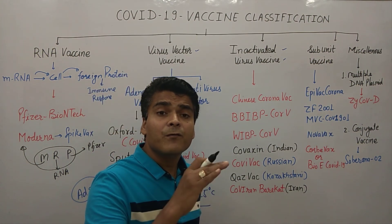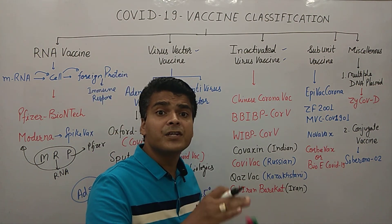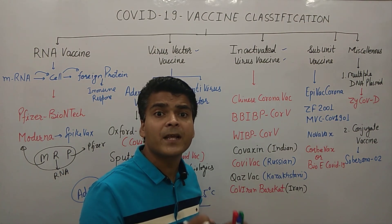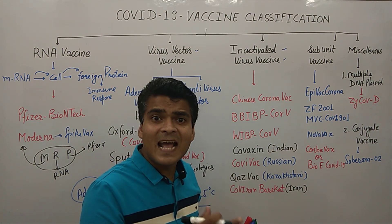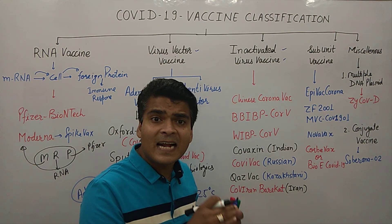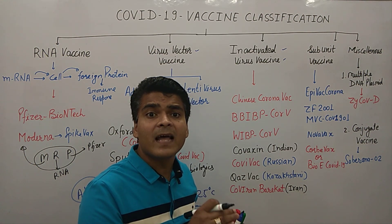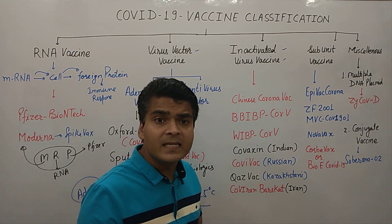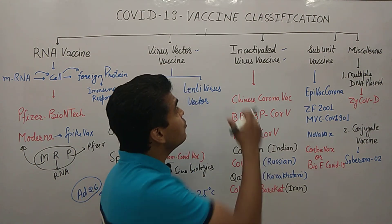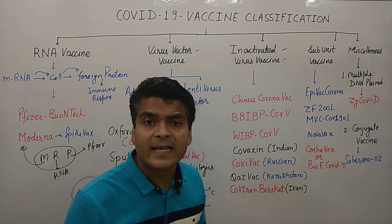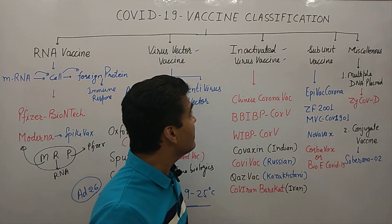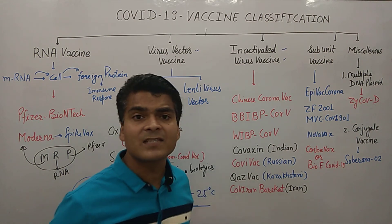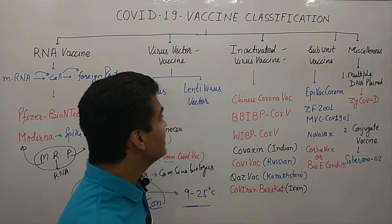Now, moving on to inactivated virus vaccines. In inactivated virus vaccines, the virulence property of the coronavirus is diminished — the virus is inactivated — and its proteins are then used to induce an immune response.